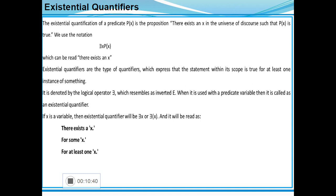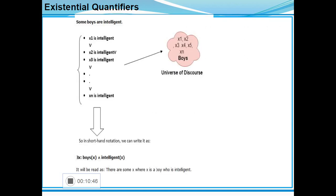It can also be read as: there exists, for some x, for at least one x. One example to understand the existential quantifier is: some boys are intelligent. x1 is intelligent or x2 is intelligent, x3 is intelligent or up to xn is intelligent. Here the variables x1 is also a universal discourse variable. The corresponding mathematical notation is: there exists x, boys(x) and intelligent(x). There are some x where x is a boy who is intelligent.